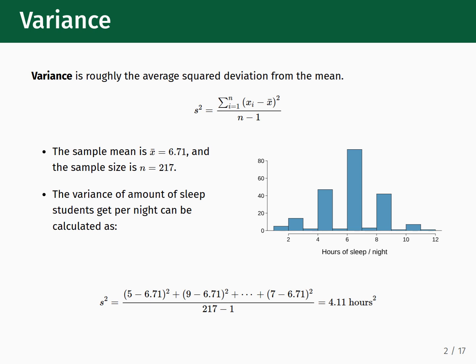So, for example, one respondent answered 5 hours of sleep per night. We compute 5 minus 6.71, then square that. Another respondent answered 9 hours of sleep per night, so we compute 9 minus 6.71 and square that. We continue doing this until we reach the last piece of data, a response of 7 hours per night. We compute 7 minus 6.71 and square that. We then add together all of those computations. Then, we divide that summation of values by the number of samples minus 1. This yields a variance of 4.11 hours squared, which provides a measure of the spread of the data distribution.